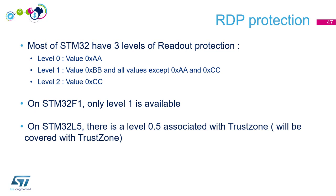Most STM32 devices have three levels of readout protection: level 0, level 1, and level 2. On the STM32F1, there is only one level of RDP. On the L5, there is an additional level associated with TrustZone, which will be covered in the TrustZone section.